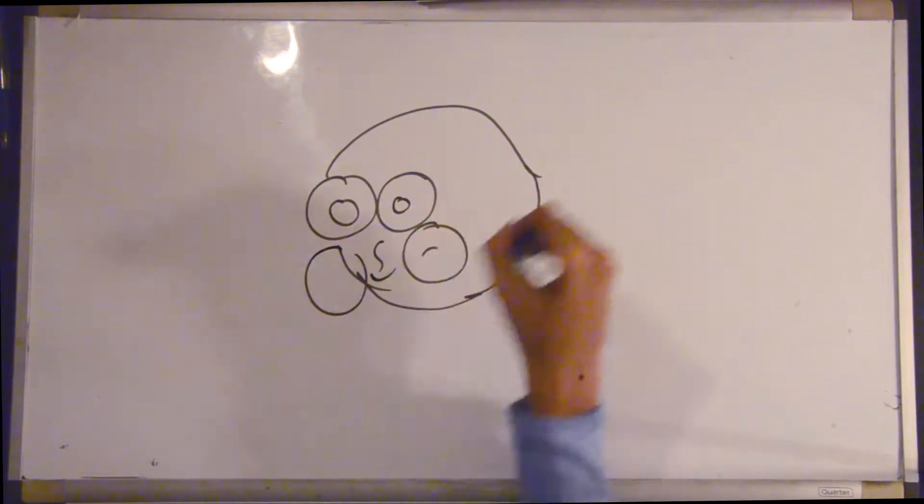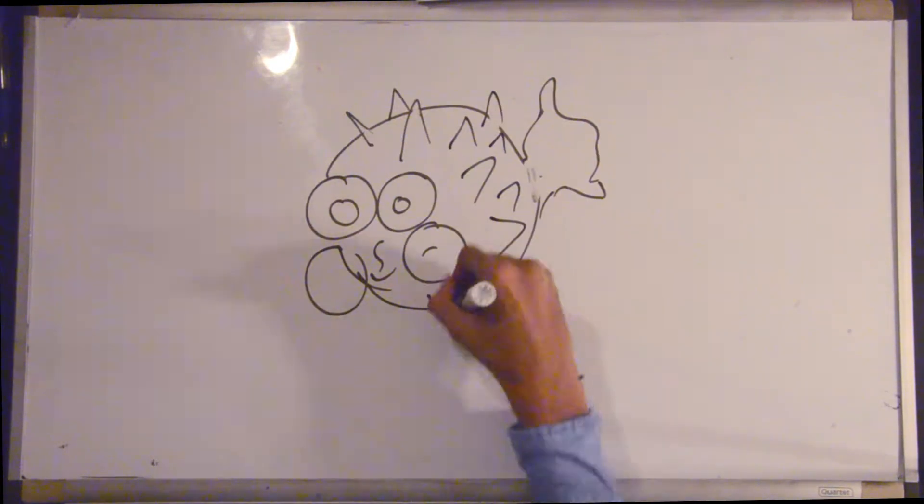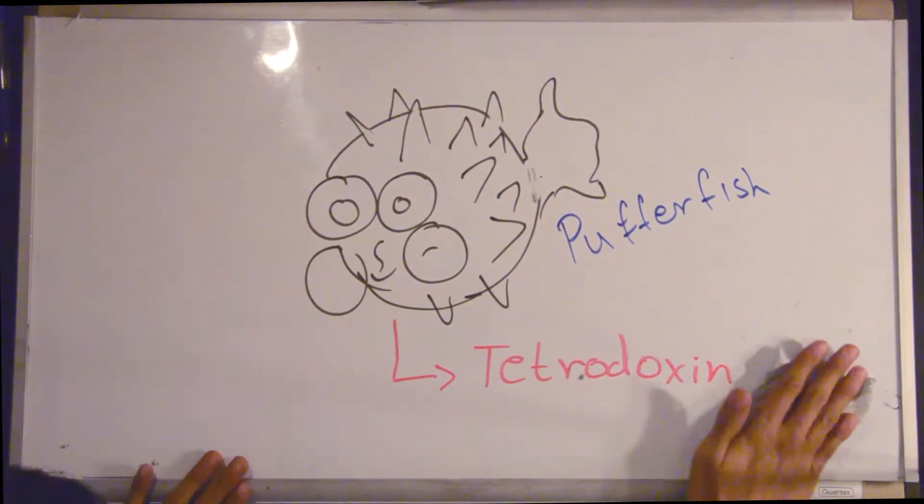Now moving on to toxins. Tetrodotoxin is a toxin involved in sodium channel blocking. Several species that carry the toxin include pufferfish, porcupine fish, ocean sunfish, and triggerfish.